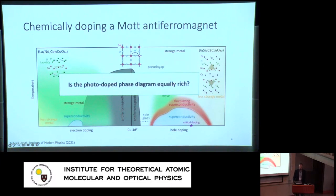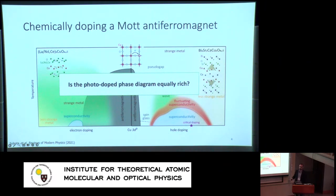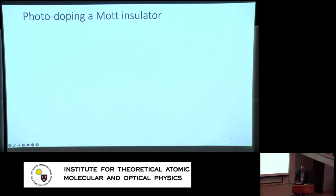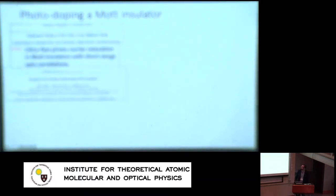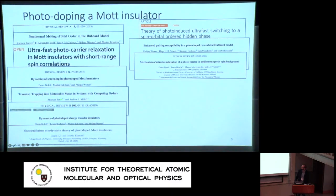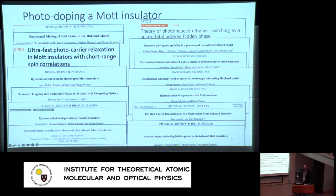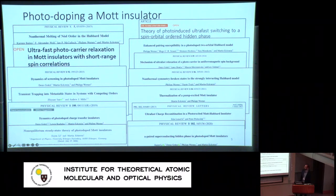So the question is: is the photodoped phase diagram equally rich? Instead of using chemical doping to change the doping concentration, if we use light, is the non-equilibrium phase diagram equally rich as the equilibrium phase diagram? In recent years, this has gained a lot of interest in the field, especially in the theoretical realm. Here I show a snapshot of all the theoretical papers that have come out just in the past ten years or so.